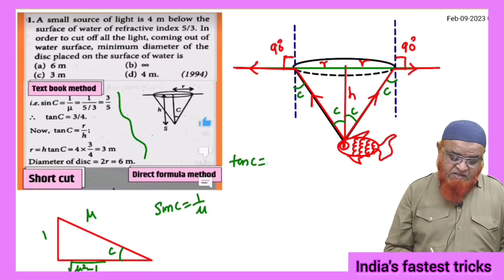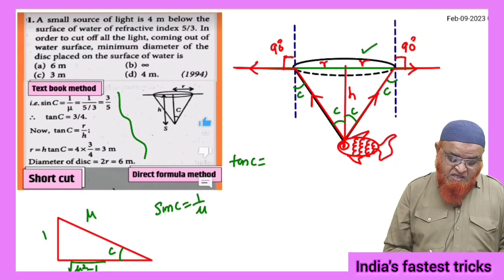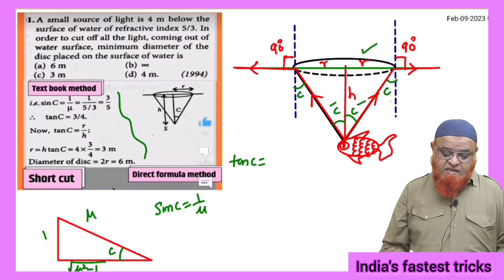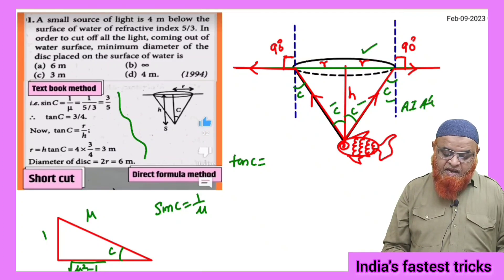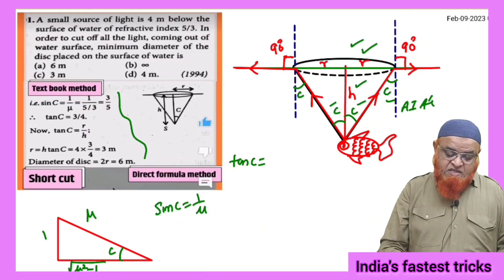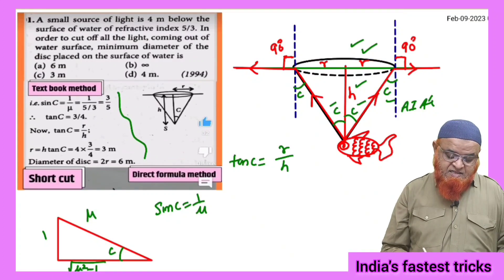So for that, a formula is you can just take tan c. Tan c is equal to opposite side. This is also angle c. And this is also angle c. These are called as alternate interior angles.